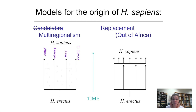Let's now use genetic variation to test hypotheses about how populations on the human lineage evolved through time. Specifically, let's use genetic data to test the multi-regionalism and replacement models, or hypotheses.